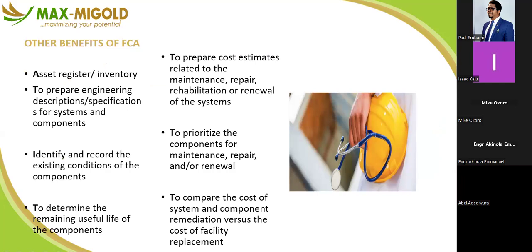Benefits of facility condition assessment: with your assessment, you can easily create an asset register. You can prepare engineering descriptions and specifications for systems and components — for example, when you assess your staircase and discover it lacks a handrail, your report will specify the required length, pipe diameter, and materials such as mild steel or stainless steel. You then identify and record the existing condition of each component one after the other — leakages, facade deterioration, POP ceiling damage, floor tiling failure.